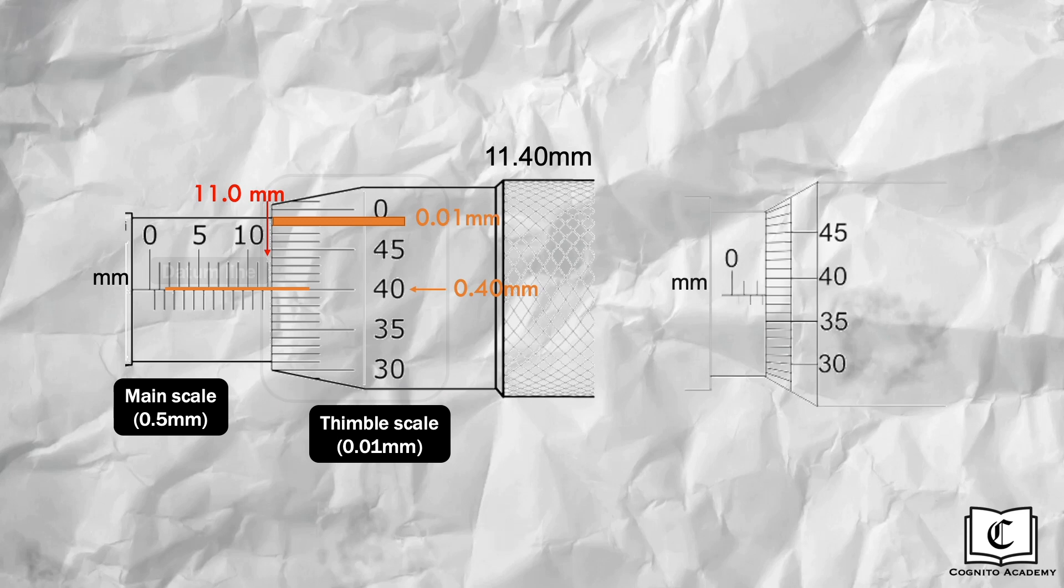Let's try another example. Reading the main scale here gives us 2.5 mm, and the timbre scale gives 0.38 mm. Adding both readings gives 2.88 mm.